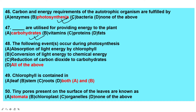The following events occur during photosynthesis: absorption of light energy by chlorophyll, conversion of light energy to chemical energy, and reduction of carbon dioxide to carbohydrates. All these processes take place during photosynthesis — the answer is all of the above.